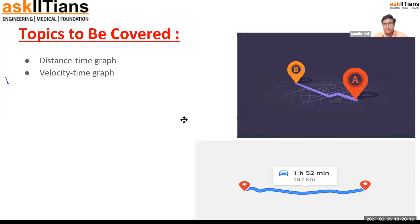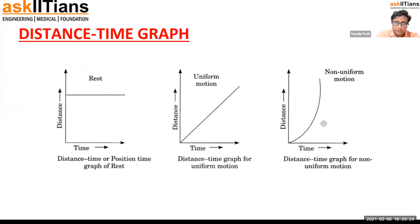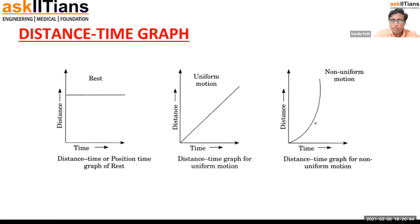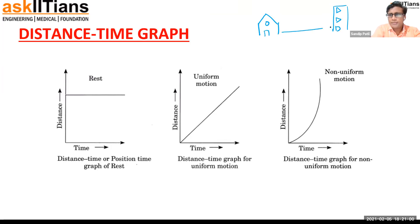Let's start with the distance-time graph. On the y-axis is distance and on the x-axis is time. A simple example: consider the distance between your home and school. Let's say the distance is about 5 km to your college.